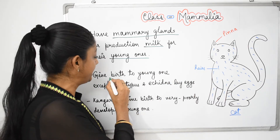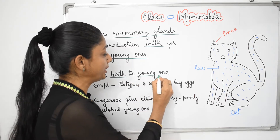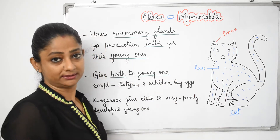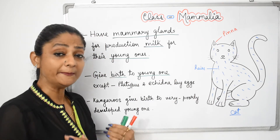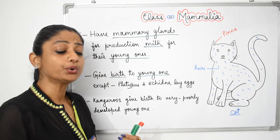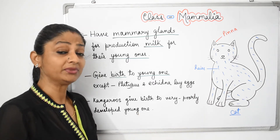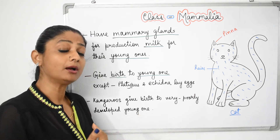Generally, mammals give birth to young ones. We are mammals — we have our children directly.